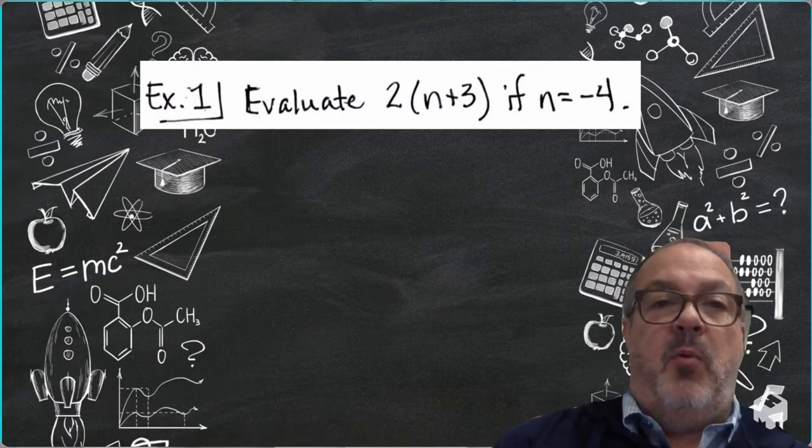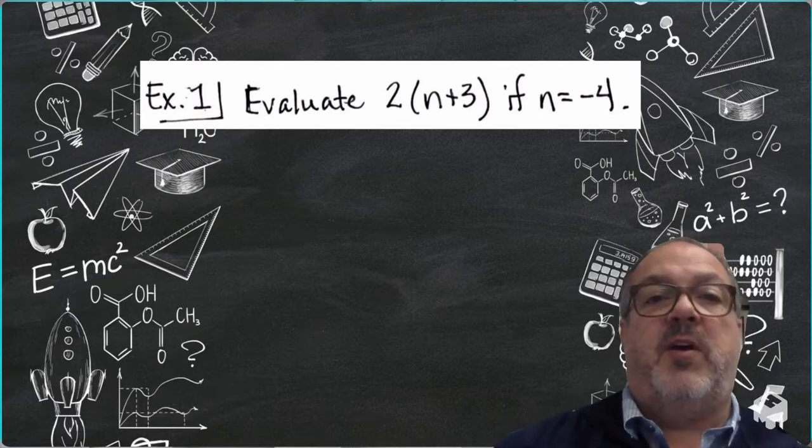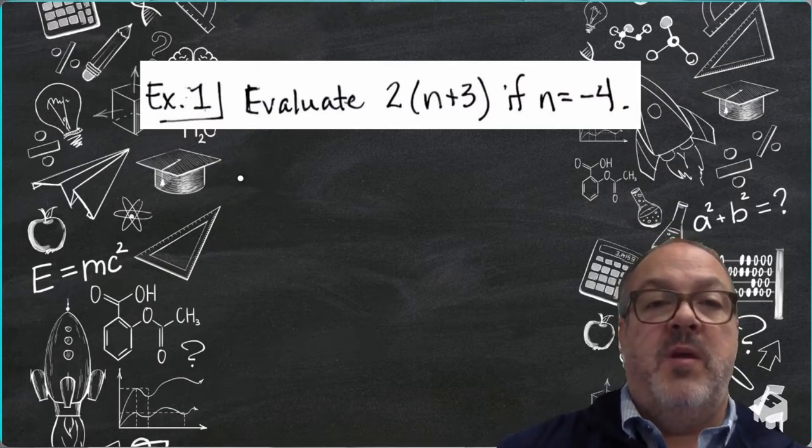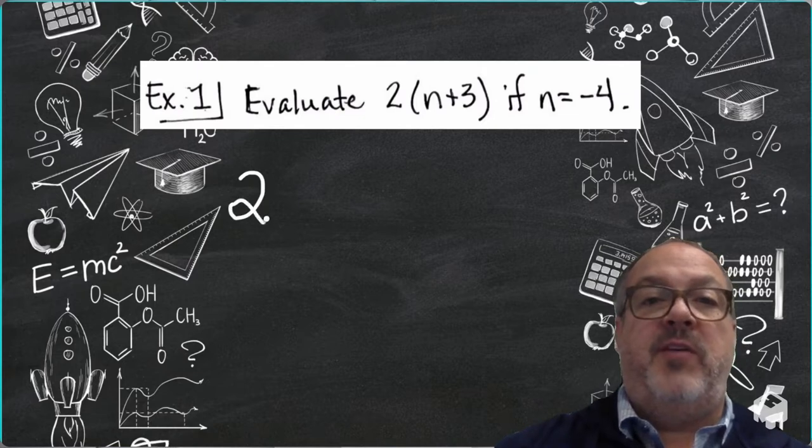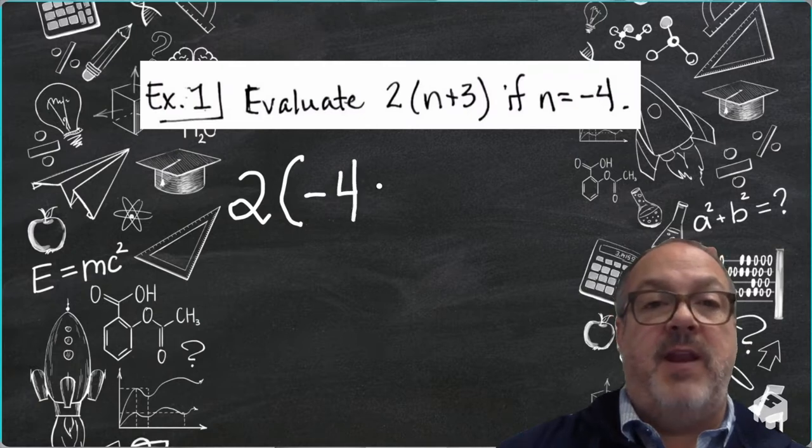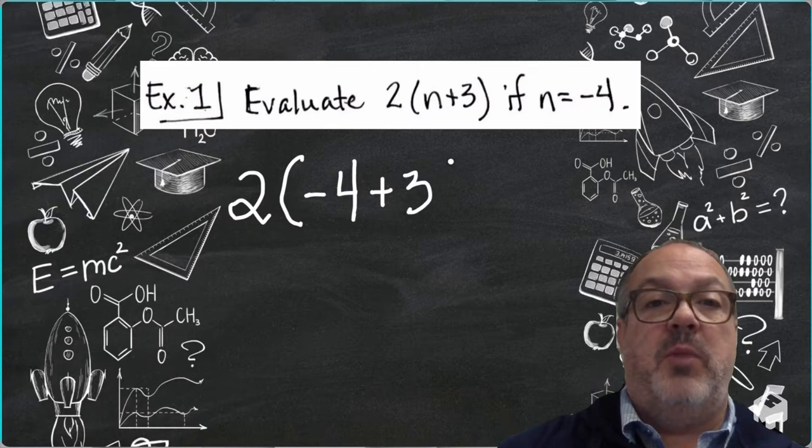Okay, in example 1, we're going to evaluate the expression 2 times n plus 3 if n equals negative 4. So what I'm going to do is I'm going to substitute negative 4 for my variable of n. So I'm going to write it as 2 times the quantity of negative 4 plus 3.